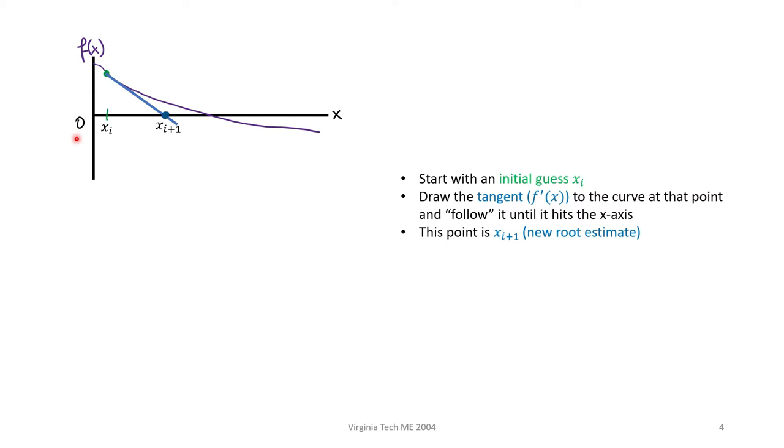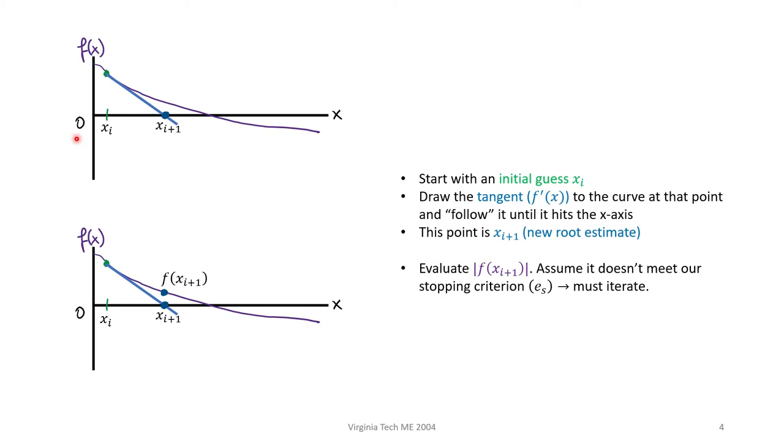This is where we assume the root is. Let's call this point x sub i plus 1. We need to check if it's within our tolerance, so we evaluate the absolute value of the function at this new point. For generality, I didn't put any numbers on the graph, but we can assume that f of x sub i plus 1 does not meet the stopping criterion, so we must repeat this process.